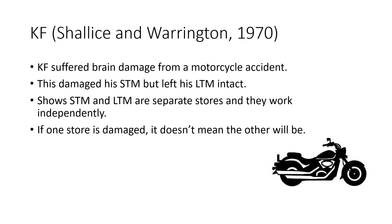Two case studies can be used in evaluation. KF was studied by Shallice and Warrington in 1970. KF suffered brain damage from a motorcycle accident, which damaged his short-term memory but left his long-term memory intact. This shows that short-term memory and long-term memory are separate stores that work independently — if one is damaged, it doesn't mean the other will be.